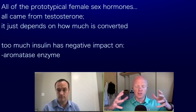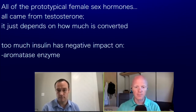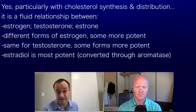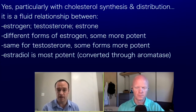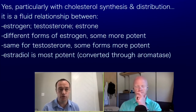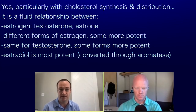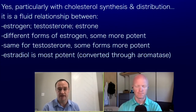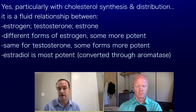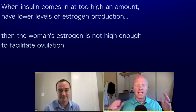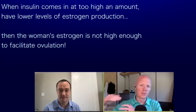Too much insulin actually starts to directly impact that enzyme. Particularly with cholesterol synthesis and distribution, it is a fluid relationship between estrogen, testosterone, estrone, and estriol — all different forms of estrogen, some more potent than others. Similarly, testosterone and dihydrotestosterone differ in potency. Estradiol is the most potent form of estrogen, and it's created directly from testosterone through aromatase. When insulin comes in at too high a level, we have lower levels of estrogen production because of that high insulin.